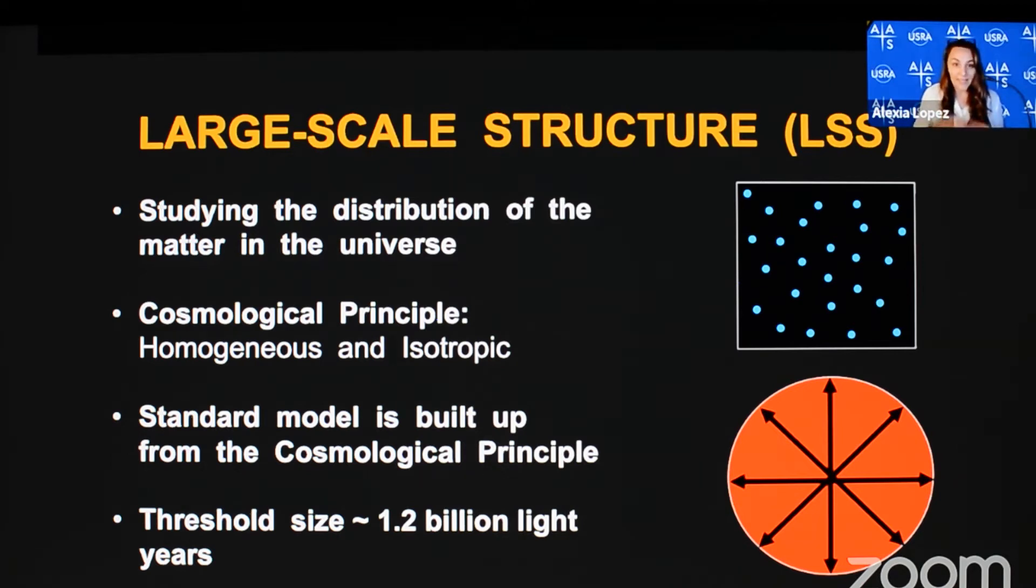It's currently estimated that on scales greater than 1.2 billion light-years, the universe should look homogeneous. And isotropic means that the universe looks the same in all directions. It is important we test these two properties of the universe. For the homogeneity, we can assess this by looking at the large-scale structure. But why is it so important?